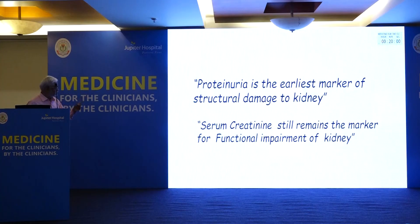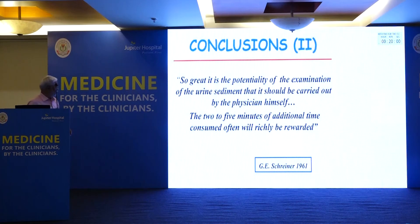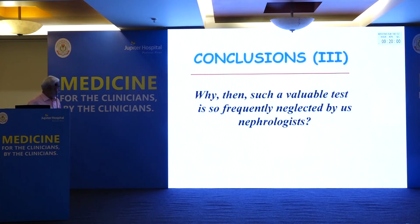Proteinuria is the earliest marker of structural damage to the kidney. Don't rely only on blood glucose in diabetics — do proteinuria every six months. Serum creatinine remains the marker of functional impairment, but to see an increase in creatinine, 50% of the kidney must already be damaged. So the early marker may be GFR, but Indian patients often have a low GFR; go with the marker of structural damage first. As stated in 1961: 'So great is the potentiality of examination of urine sediment that it should be carried out by the physician himself — two to five minutes of additional time consumed will often be rewarded.' Why then is such a valuable test so frequently neglected?